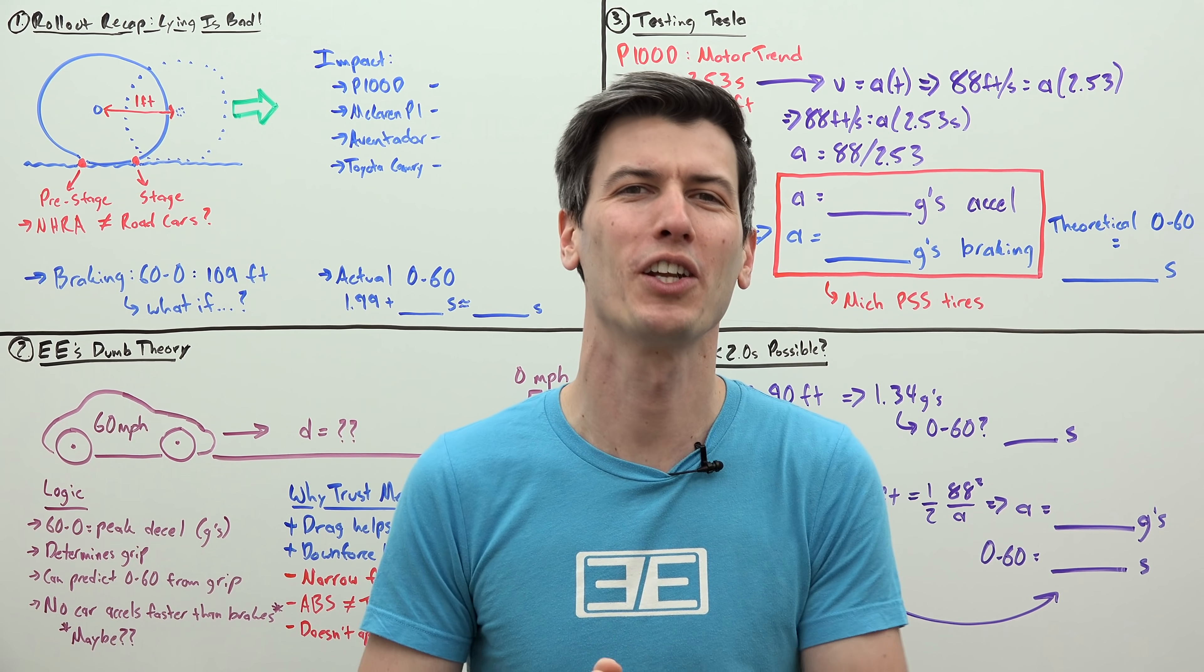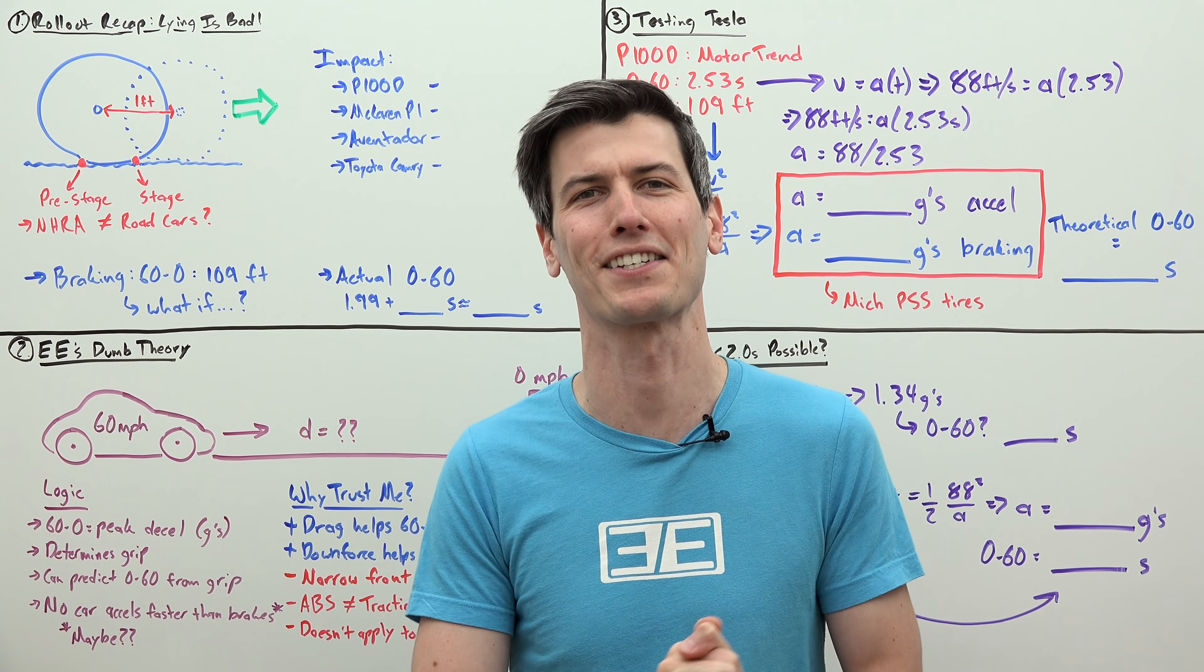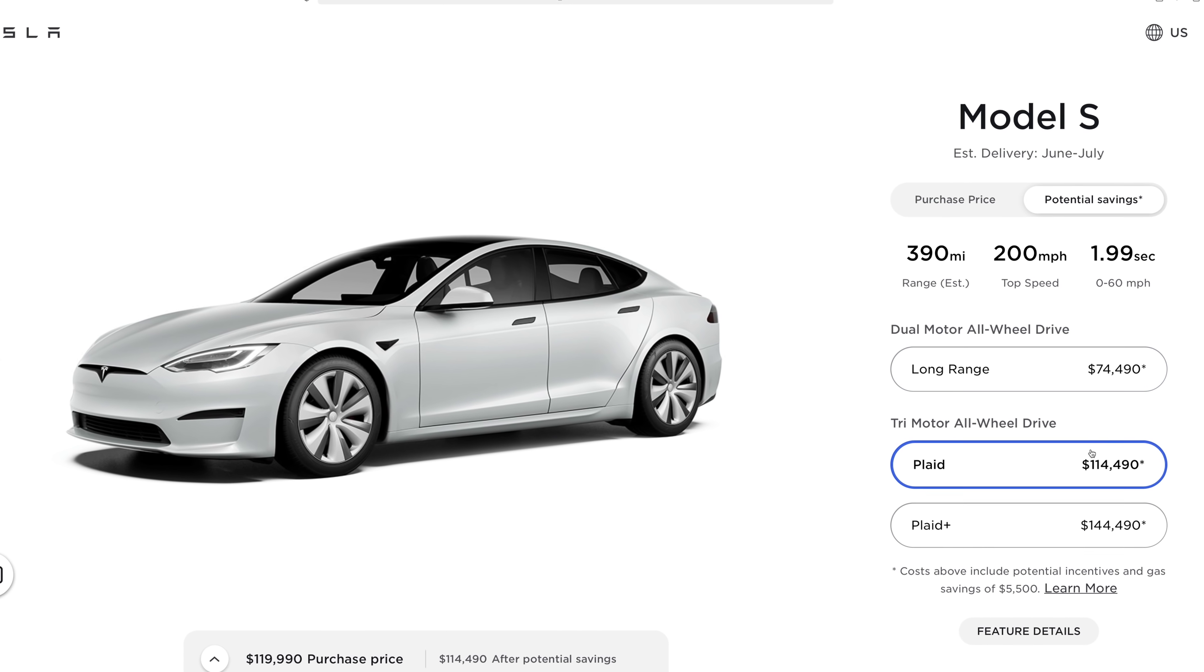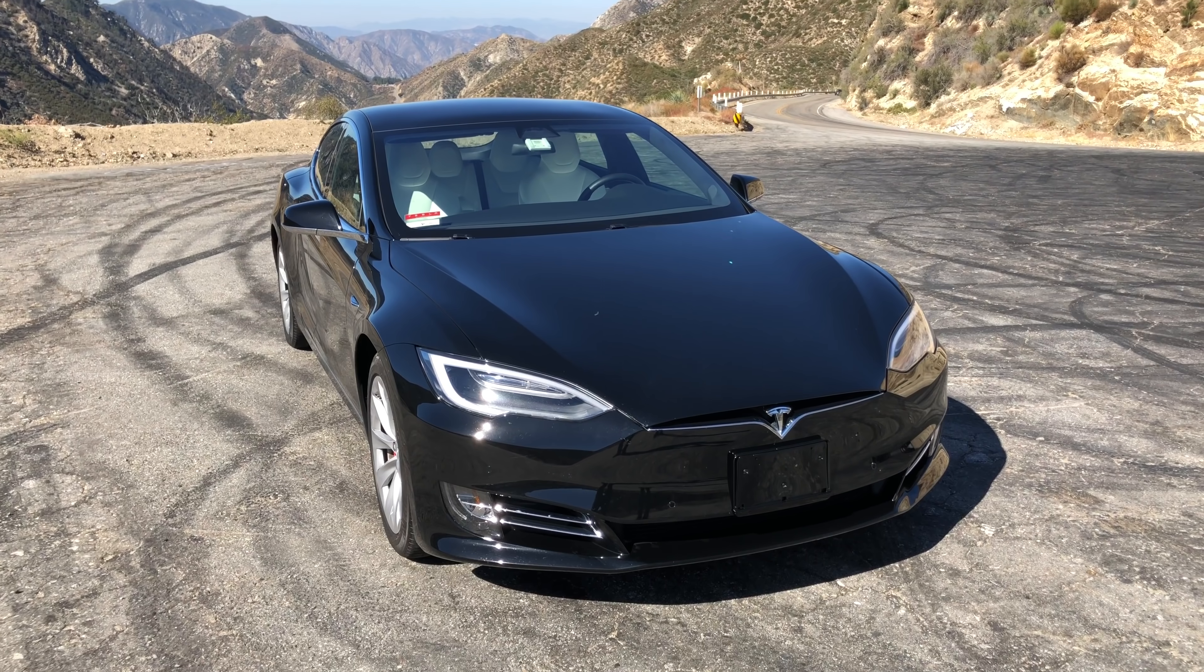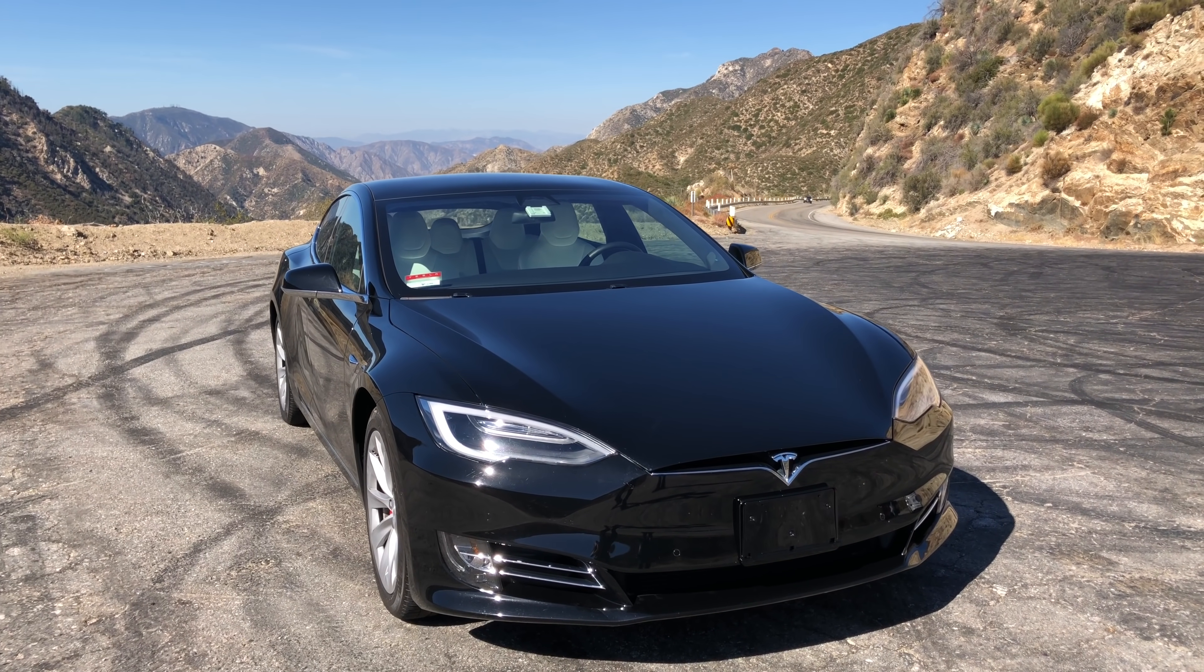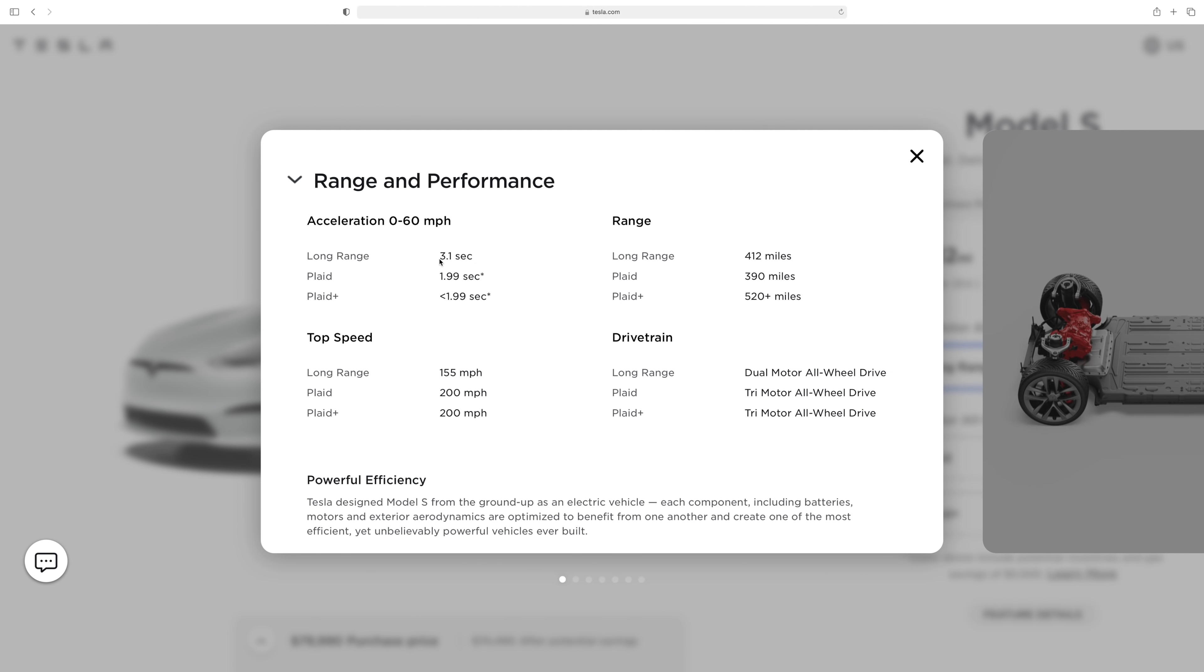Hello everyone and welcome. In this video we're going to get unreasonably passionate about pointless statistics. We're talking about how Tesla's Model S Plaid claims a 0-60 time of 1.99 seconds, but in reality it more than likely doesn't actually have a 0-60 time of under 2 seconds, and Tesla's own website suggests this if you do a little digging.